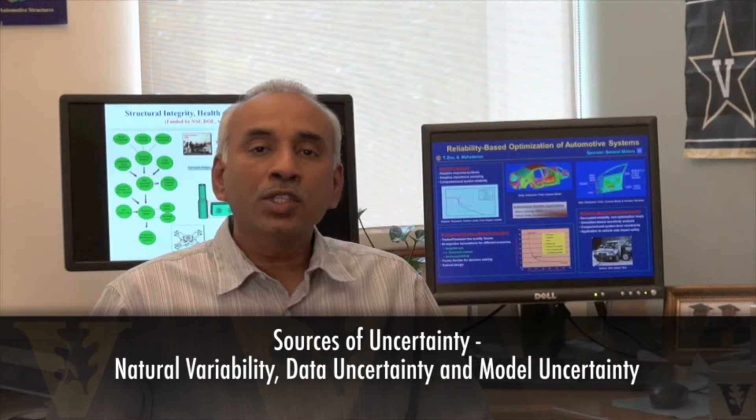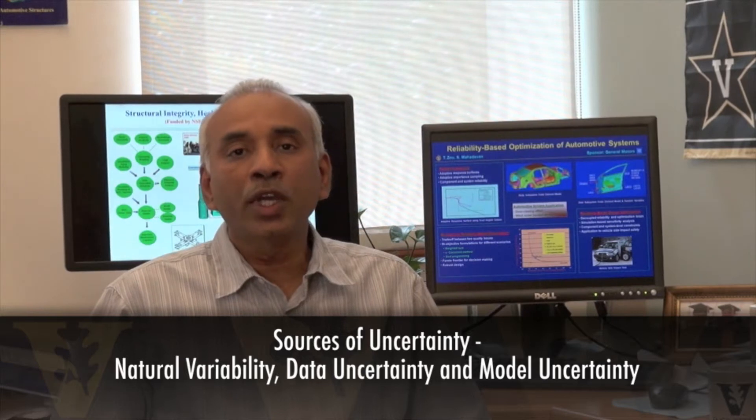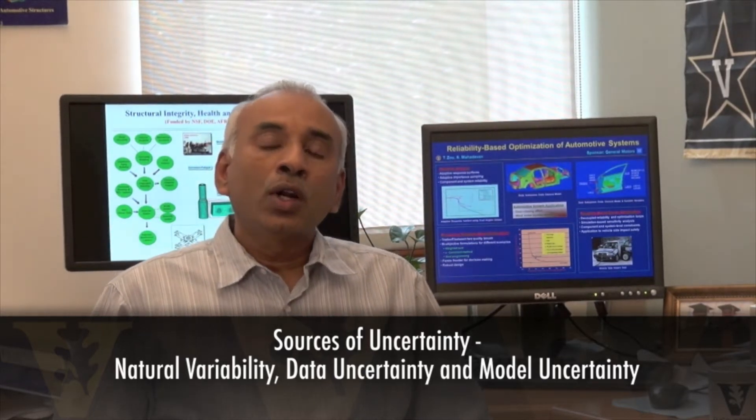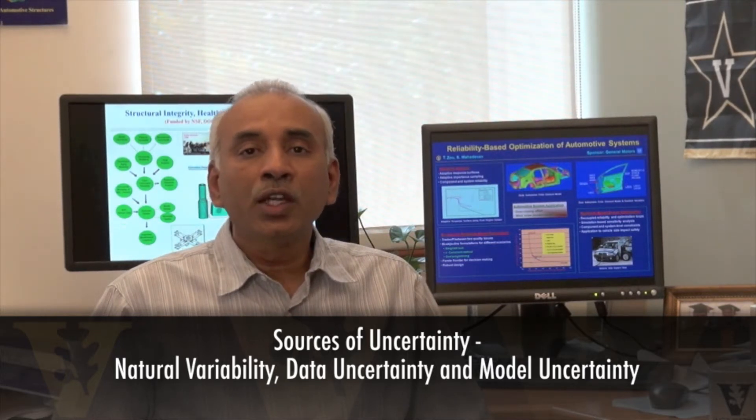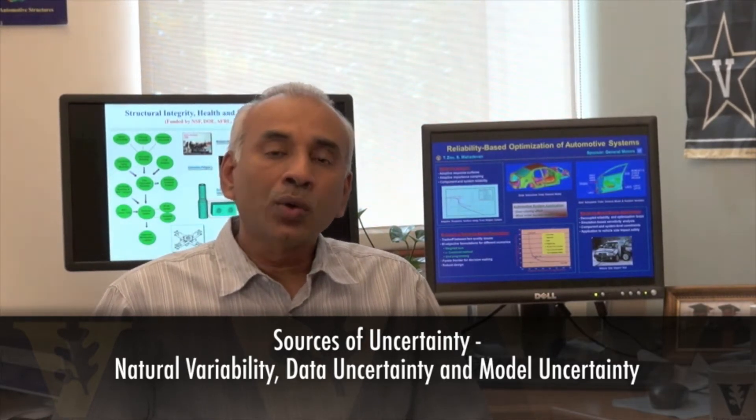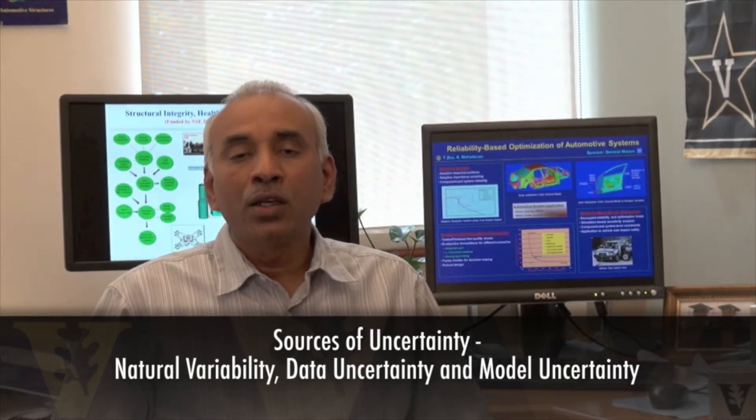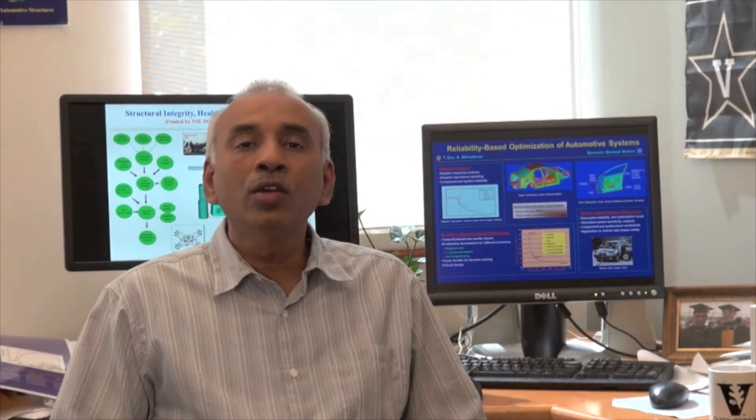The uncertainty can come from natural variability, where things vary across space, along time, or across samples. There's also data uncertainty because in many cases there's very limited data, expert opinion, qualitative data, and data errors. And then there's model uncertainty. A lot of these are based on computational models which are approximate with many assumptions. So when you make decisions under all these uncertainties, how confident are you? How to account for that uncertainty in your optimization? This is a current focus for us.